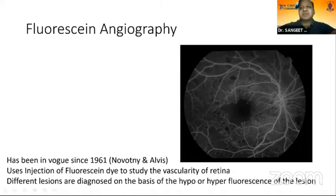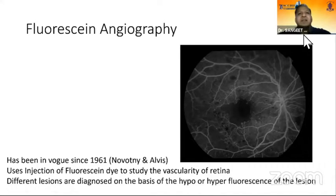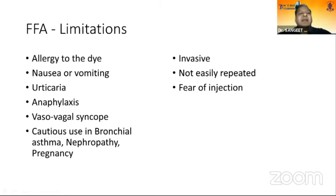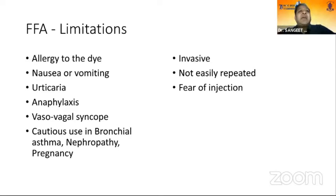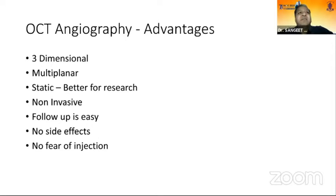Fluorescein angiography is now almost 60 years old, first being done in 1961 to study the vascularity of the retina. The word 'specific' in the topic means there is some problem with fluorescein angiography — it has limitations. The most common is the patient's fear of injection; almost 10% of patients complain of nausea or vomiting during the procedure, and there can be allergy or even anaphylaxis. Also, with the advent of OCT angiography, the indications for FFA are decreasing. OCT angiography offers three-dimensional, non-invasive imaging with no side effects.